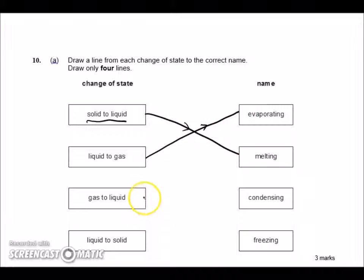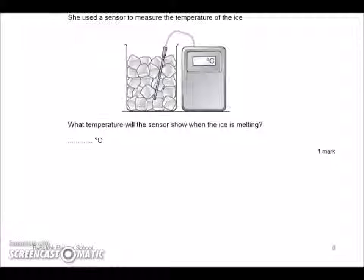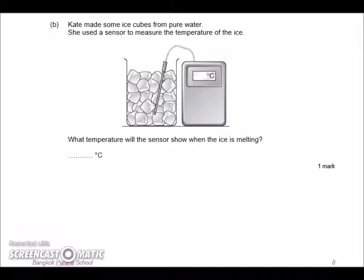Gas to liquid, that's condensing - that's like the mist that you get on a window. Liquid to solid, that's freezing, when you put liquid water in the freezer it goes from being a liquid to being a solid.